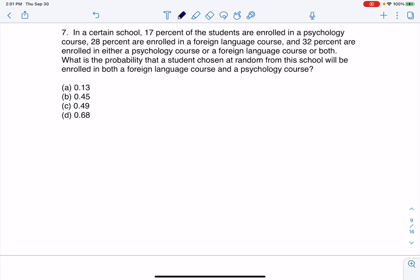Let me write this down. I like to start with the information I know. The probability that someone is in a psychology course is 0.17, the probability that someone's in a foreign language course is 0.28, and the probability that they're in one or the other is 0.32.